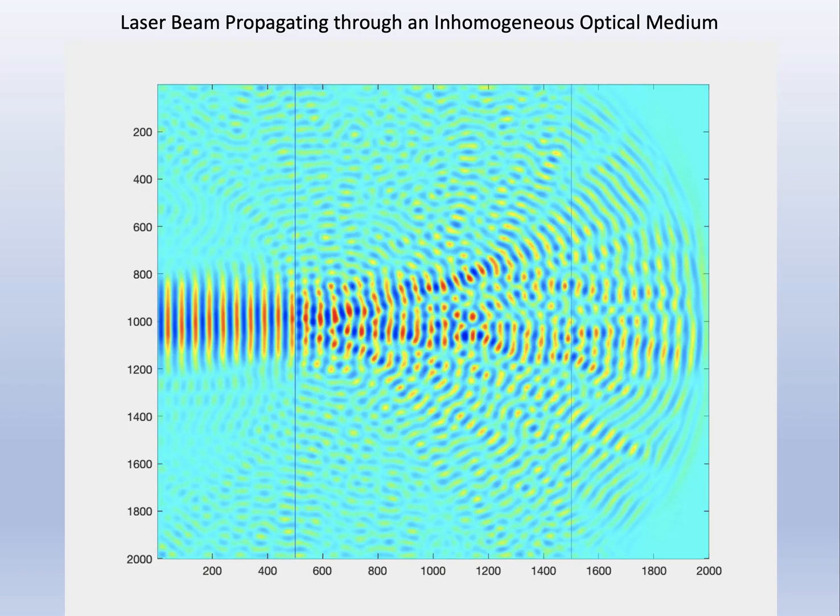You get a real sense of how that beam fragments as it travels through the inhomogeneous medium. This is roughly what happens to starlight as well when starlight comes through the atmosphere.